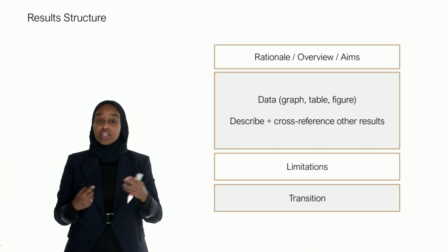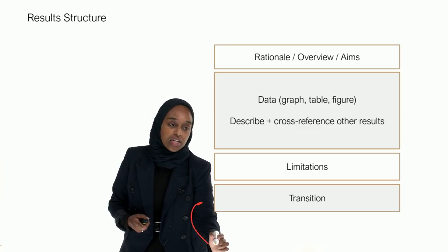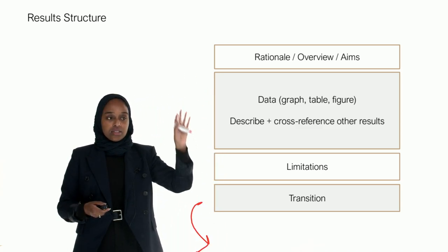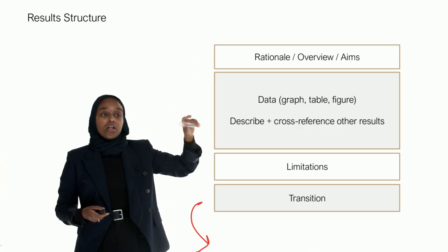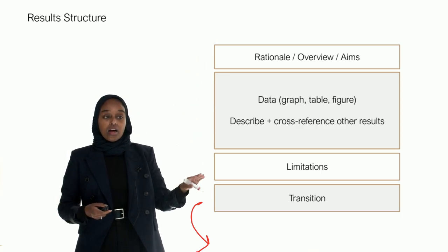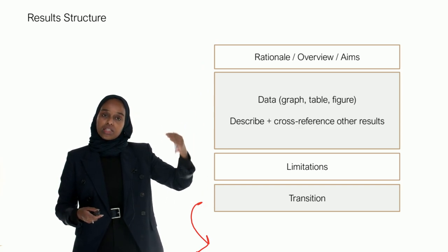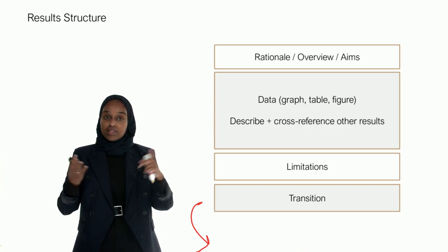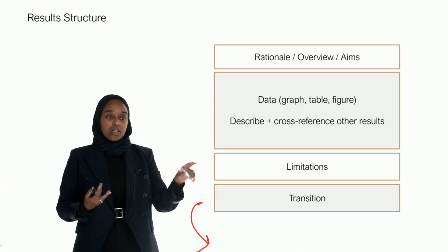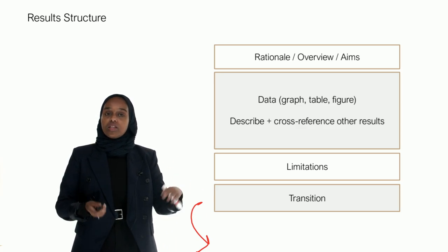And then limitations, any issues that occurred and your transition. So here you're kind of linking onto the next bit of results. It seems like it's a lot of detail but actually this can be one sentence or two. By following this layout you're ensuring that the reader knows what you've done and why you've done it. Link it to the storyline that you're telling and then transition it to the next thing.